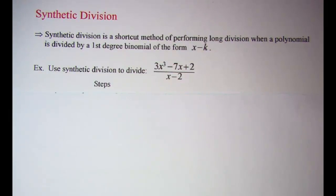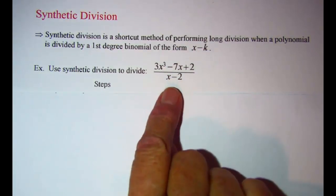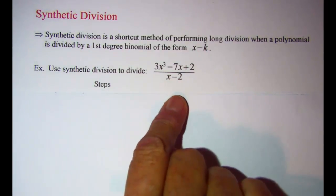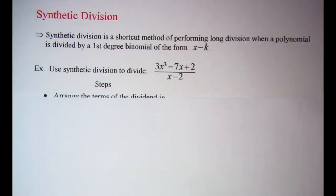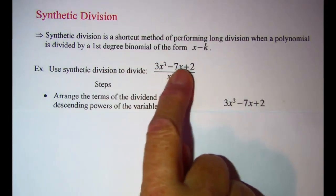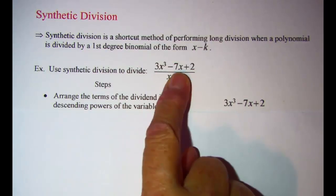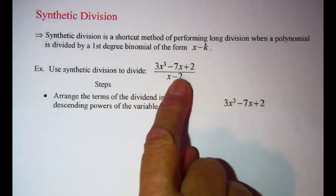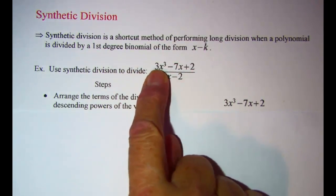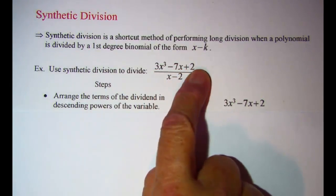The example we are going to look at is 3x cubed minus 7x plus 2 divided by x minus 2. Our first step is to arrange the terms of the dividend in descending powers of the variable. This problem is already arranged that way, but if the terms were mixed up, you would put your highest power first, then the next highest, all the way down to the constant term.